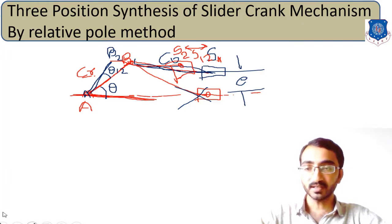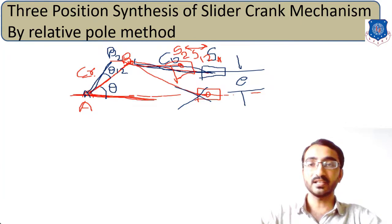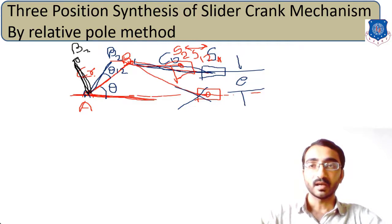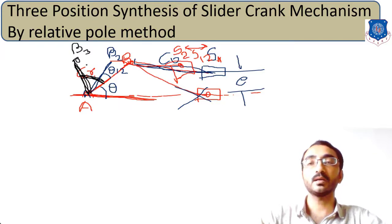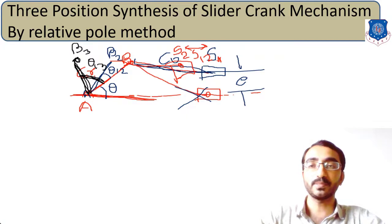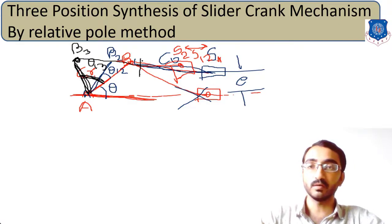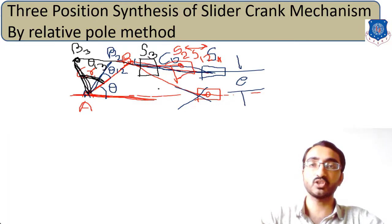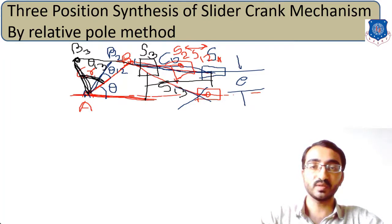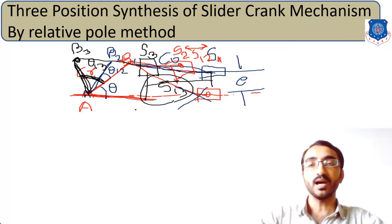Similarly, we can consider a third position. The crank reaches point B3, and the angle measured from position one to position three is called theta-13. After obtaining theta-13, the slider moves forward to slider position three. The distance measured from position one to position three is known as S13.